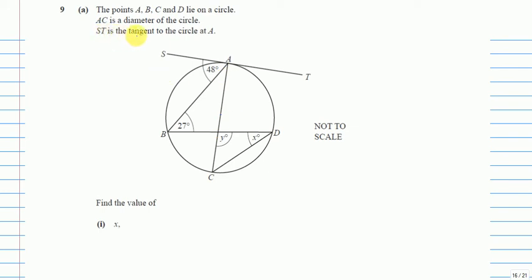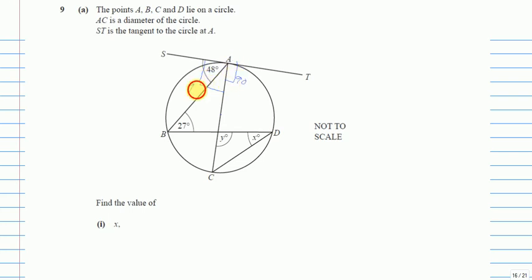ST is the tangent to the circle at A. We know from the rules that if there is a tangent on a circle and there is a radius or diameter at the same point, then the angle which forms is 90 degrees. So this is 90 degrees, and the other half is also 90 degrees — both of them are 90 degree angles.